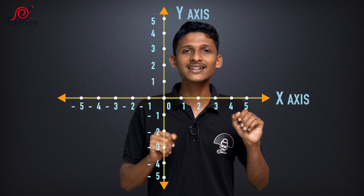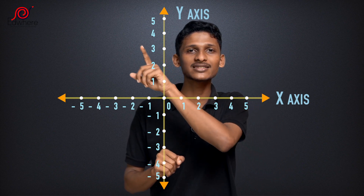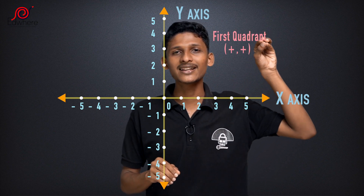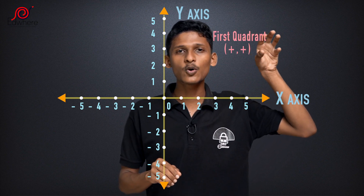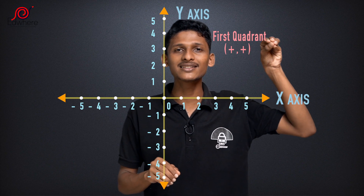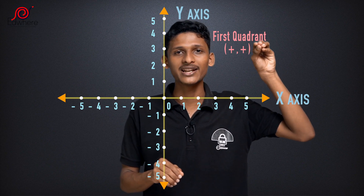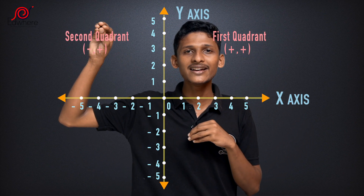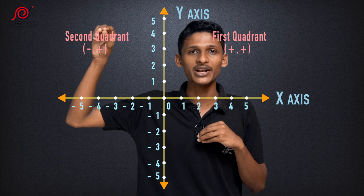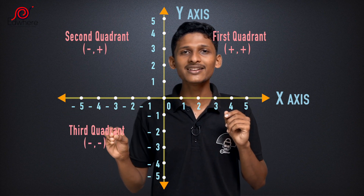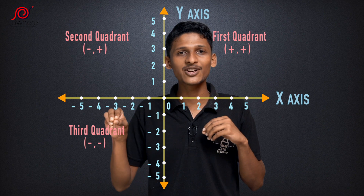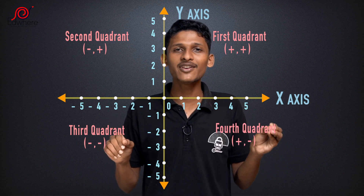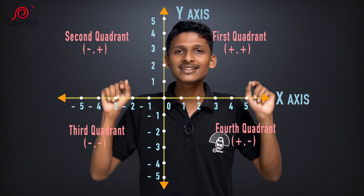In this axis, we divide 4 sections — 4 quadrants. The first quadrant: the x value and the y value are both positive. The second quadrant: the x value is negative and the y value is positive. The third quadrant: the x value is negative and the y value is negative. The fourth quadrant: the x value is positive and the y value is negative.